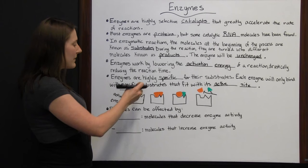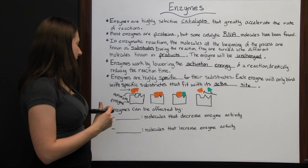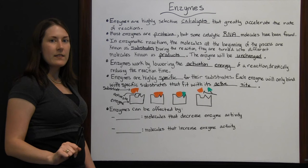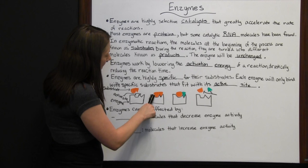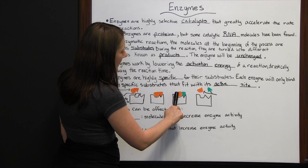Each enzyme has an active site — the open area in the overall shape of the enzyme. Only substrates with a similar shape that can fit and bind without the enzyme changing shape too much will be able to complete a reaction with that enzyme. The substrate comes into contact with the enzyme and they bond to form the enzyme-substrate complex.